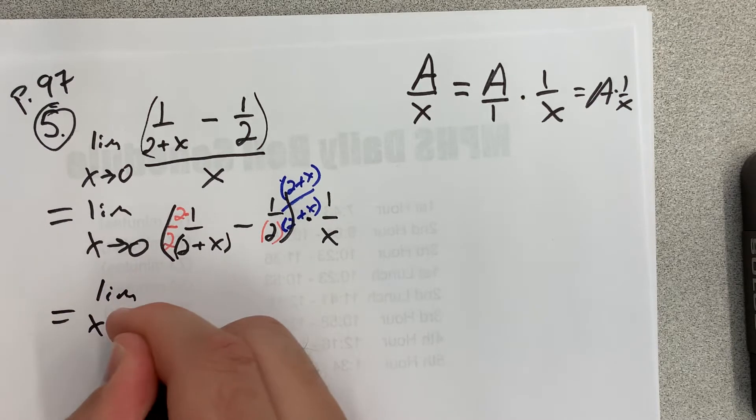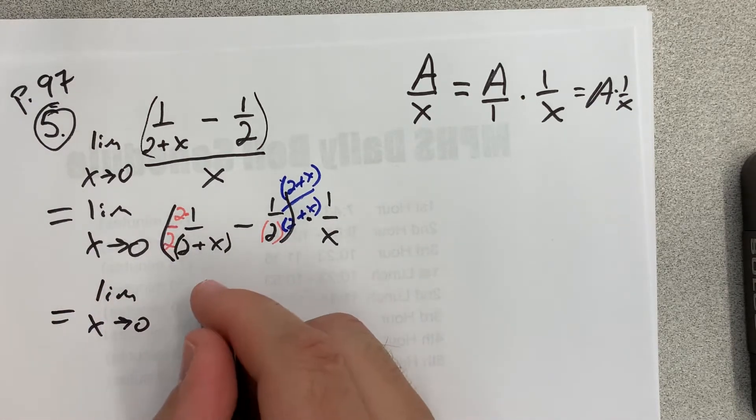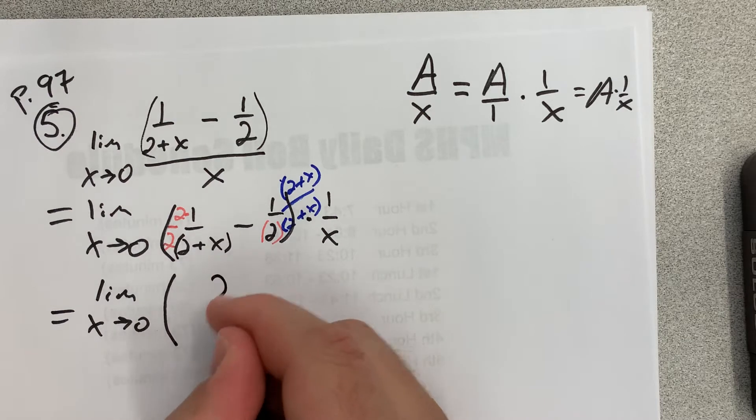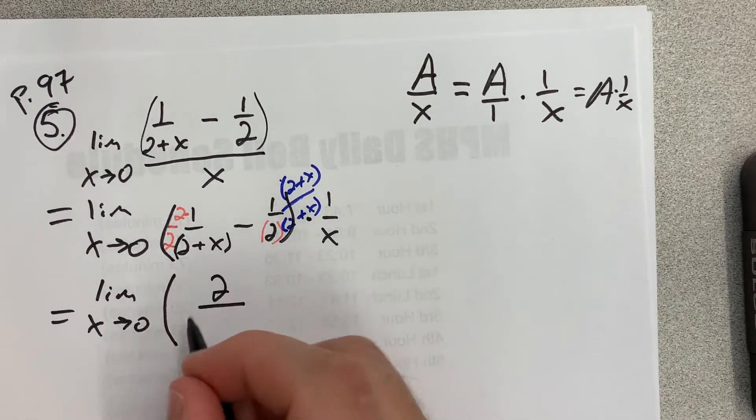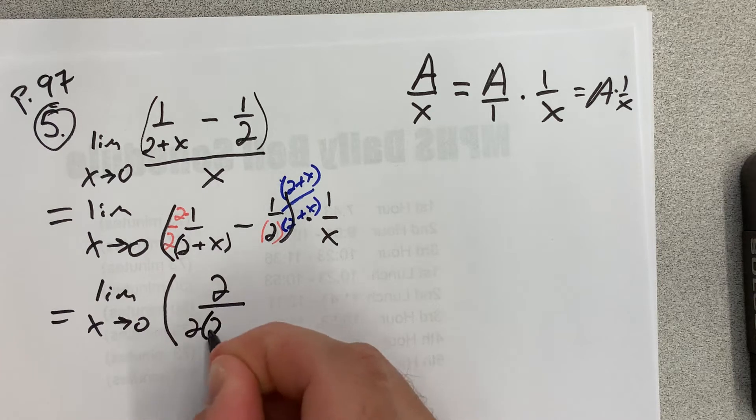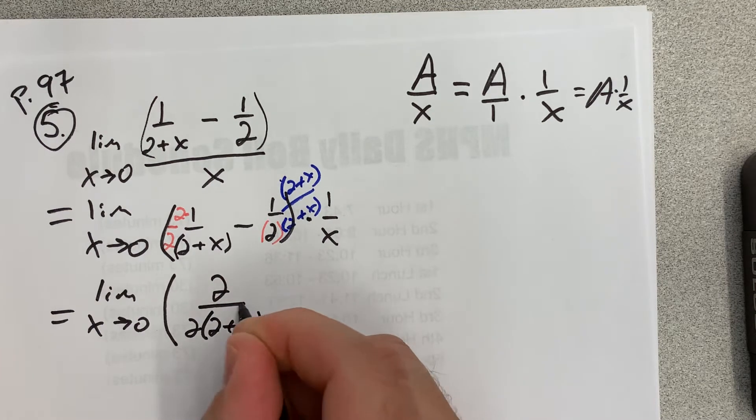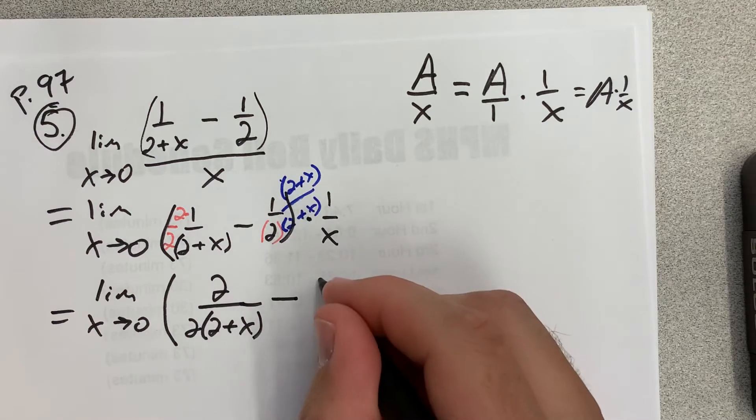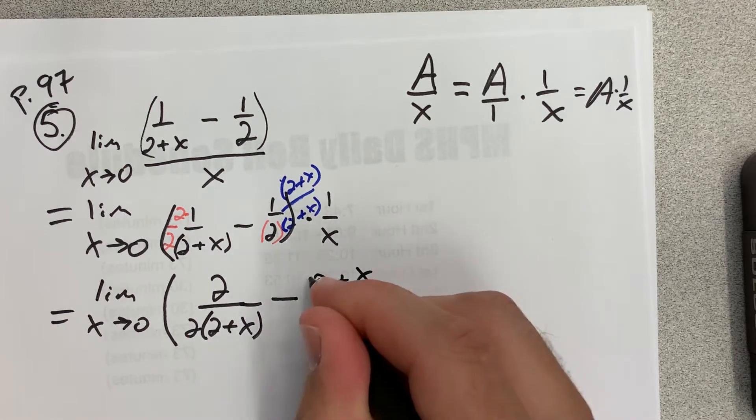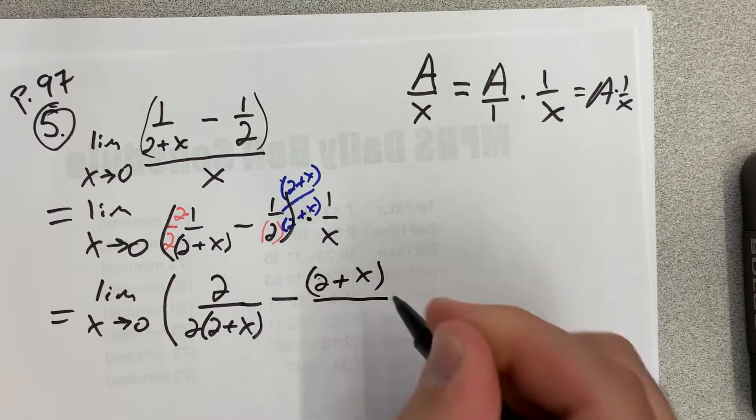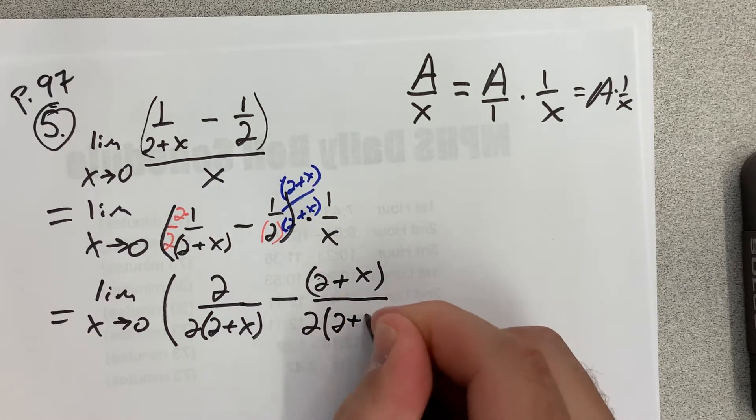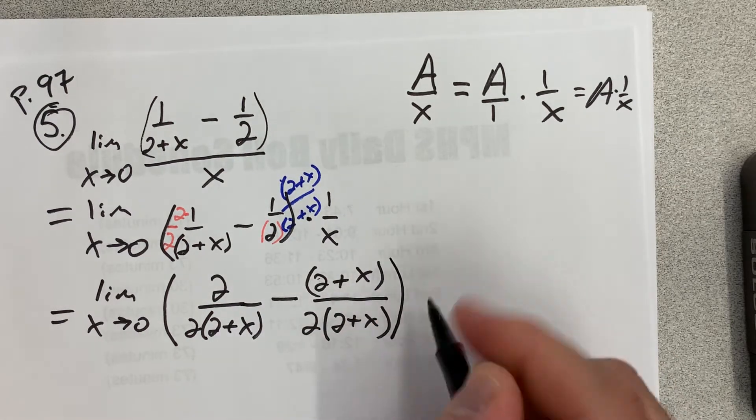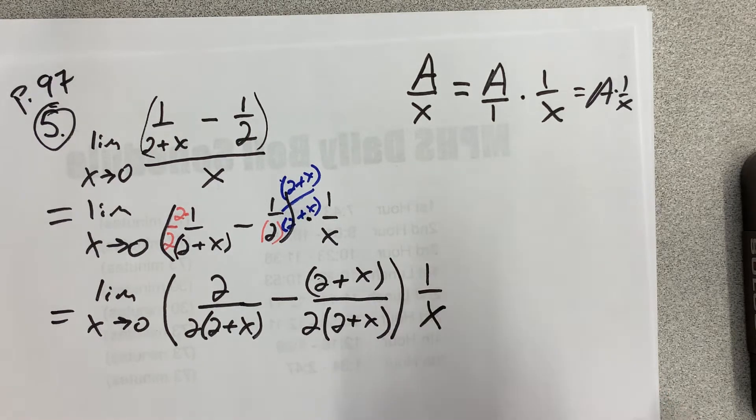Let's rewrite what we've got. We've got the limit as x approaches 0. This first fraction, I've got 2 in the numerator divided by 2 times 2 plus x. Minus, and in the numerator here I'll have 2 plus x divided by 2 times 2 plus x. That's all times 1 over x.